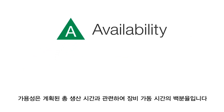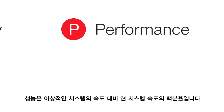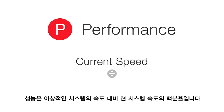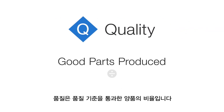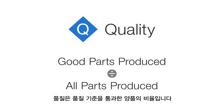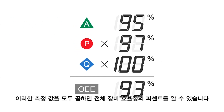Availability is the percentage of your equipment's uptime in respect to your total planned production time. Performance is the percentage of your system's speed compared to the ideal. And quality is the percentage of good parts produced that pass your quality standard. Multiply all of those measures and you get your overall equipment effectiveness percentage.